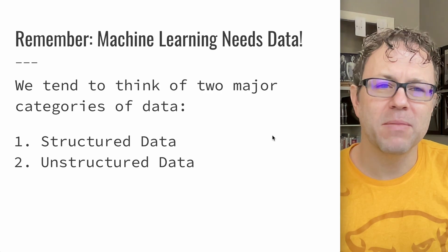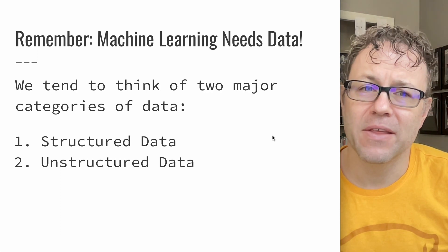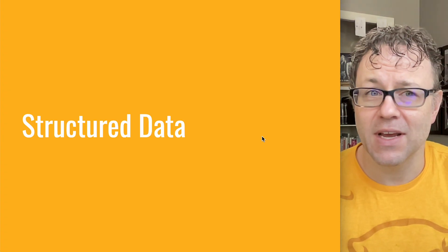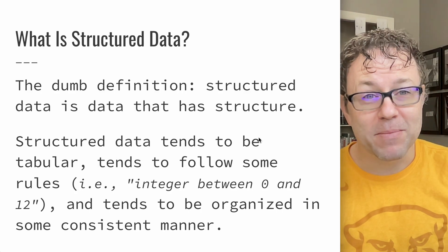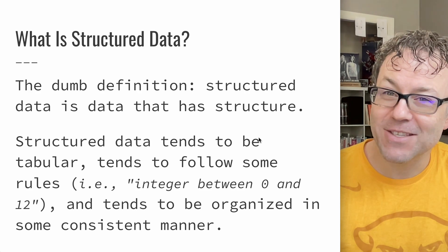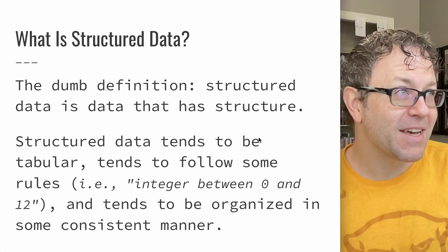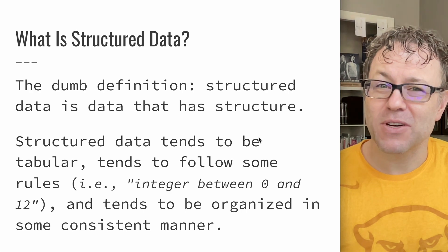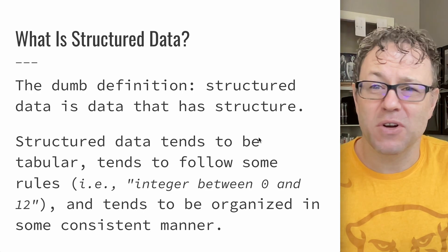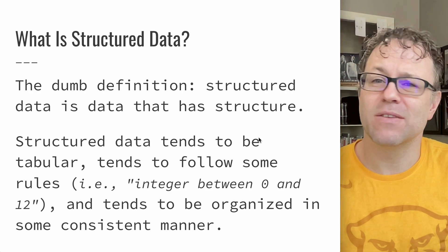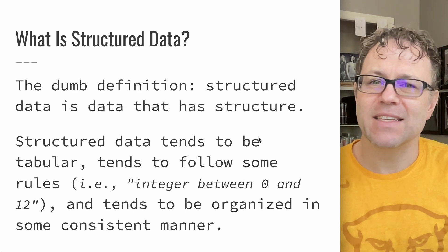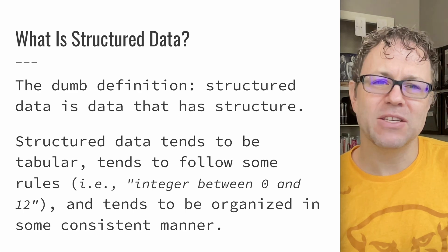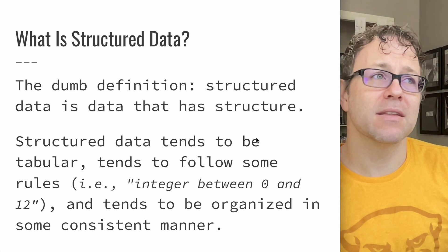We tend to think of two major categories of data: there is structured data and there is unstructured data. So let's start with structured data. On a very basic definition, structured data is data that has structure. Structured data tends to have some kind of structure, it tends to be tabular, it tends to follow some kind of rules, and has consistent patterns or consistent constraints applied to it. It generally tends to be organized consistently.